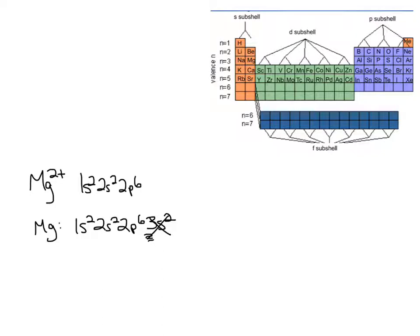Now some people also like to write 3s0 to show that there's no electrons anymore in the 3s subshell, and if you want to do that, you can, though you don't have to. You can just get rid of that completely. So there's Mg2+.